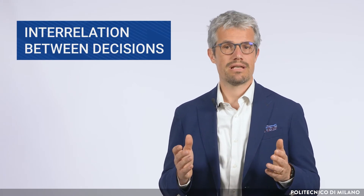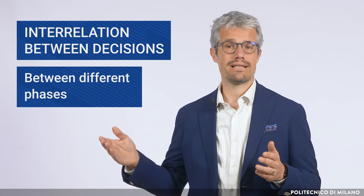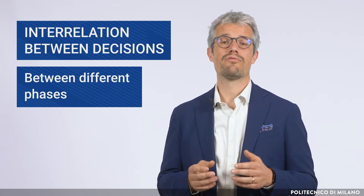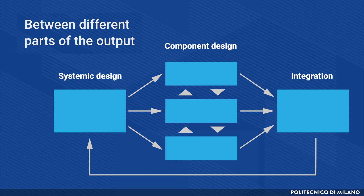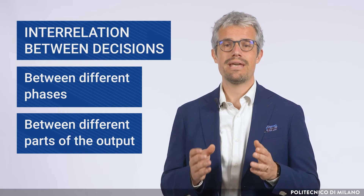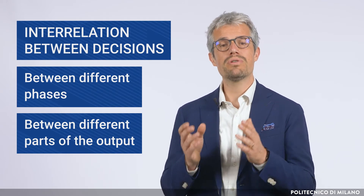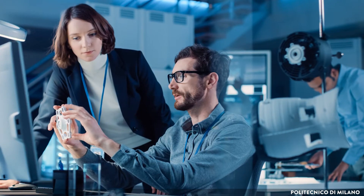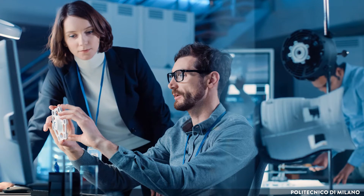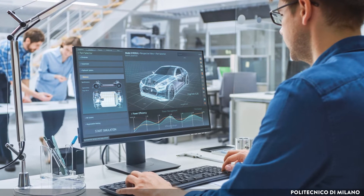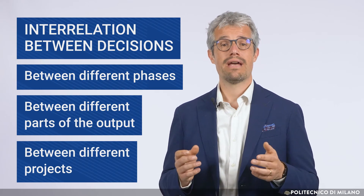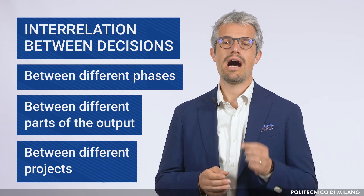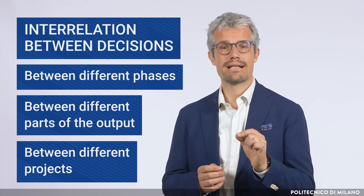The interrelation between decisions that we just described is normally among different phases, but there are also other types of interdependence between project decisions. An example is an interdependency between different parts of the output. According to this, decisions made in a part of a project might require modifying the decisions of other parts contextually. Considering the example of a car, if the team dealing with the engine's development makes substantial changes, then the team taking care of the electronics or the chassis will have to take this into account by adapting their part of the project. Finally, there will be a possible interdependency between projects.